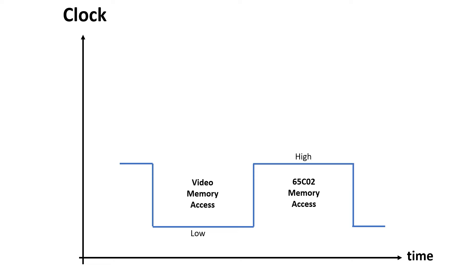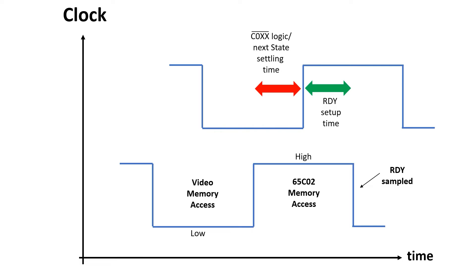If we go back to our clock diagram, the video memory has access while clock's low, and the 65C02 has access while clock's high, but the ready signal is sampled on the falling edge of clock. So we're going to want our state machine to be updated sometime after the rising edge of clock and sometime before the falling edge of clock. If I put our state machine clock about 90 degrees out of phase with the main clock, then that'll give our C1000 logic and our next state logic time to settle before we need it. It also means the ready signal will be set up well before the 6502 reads it.